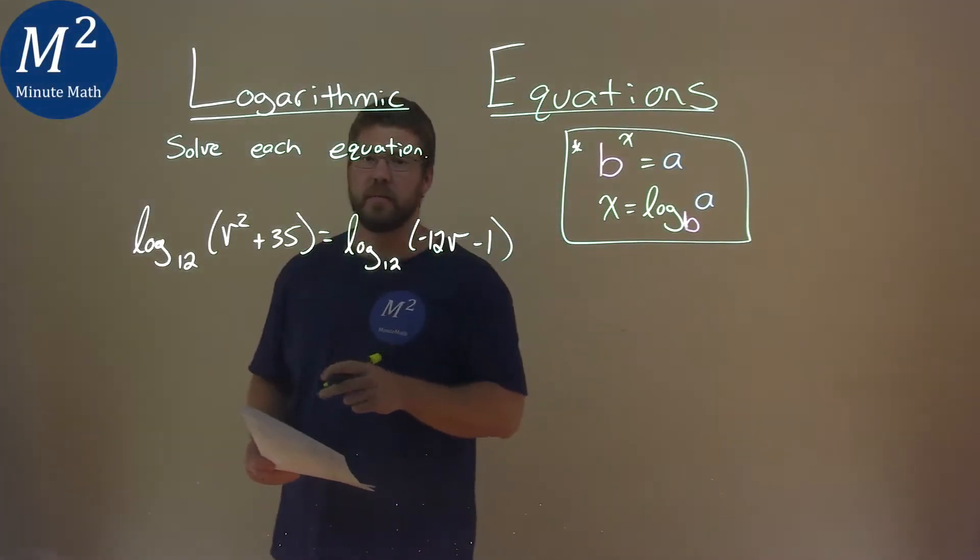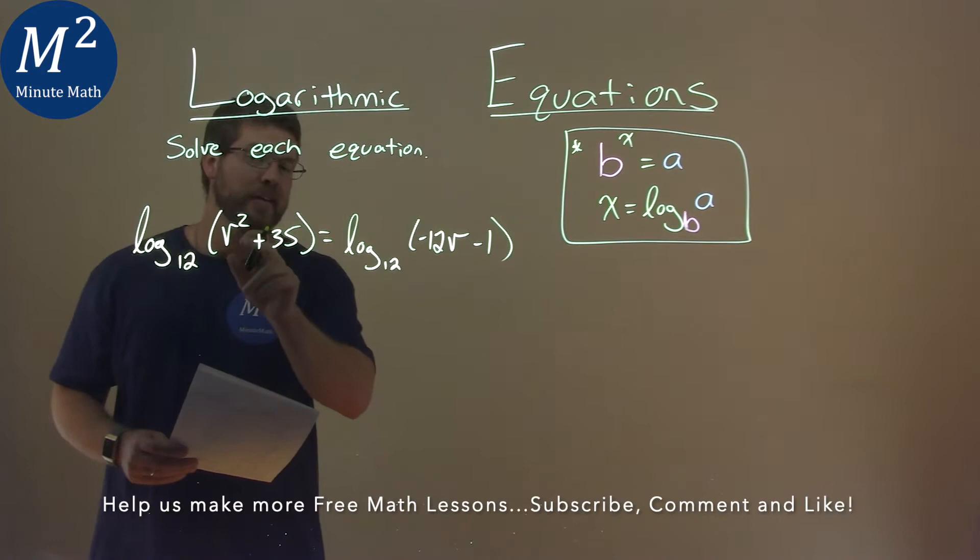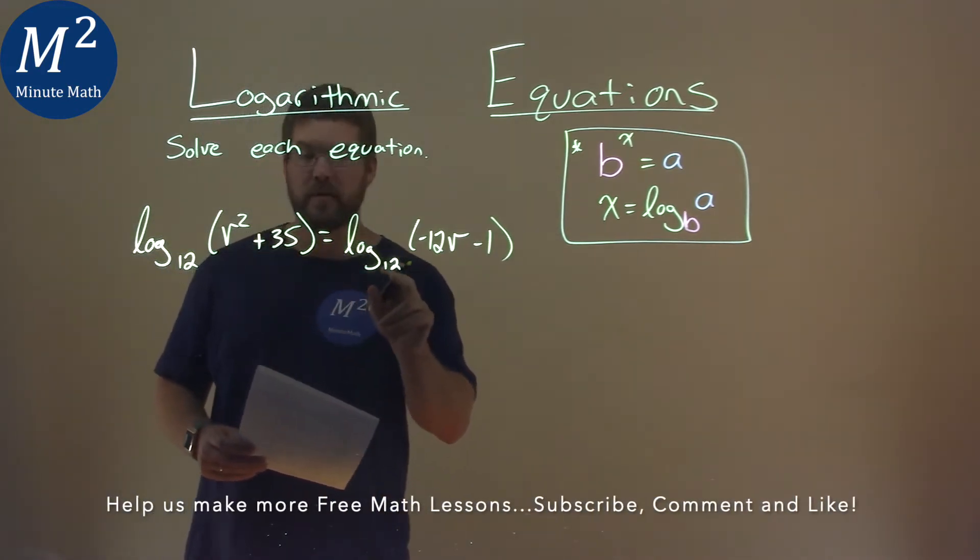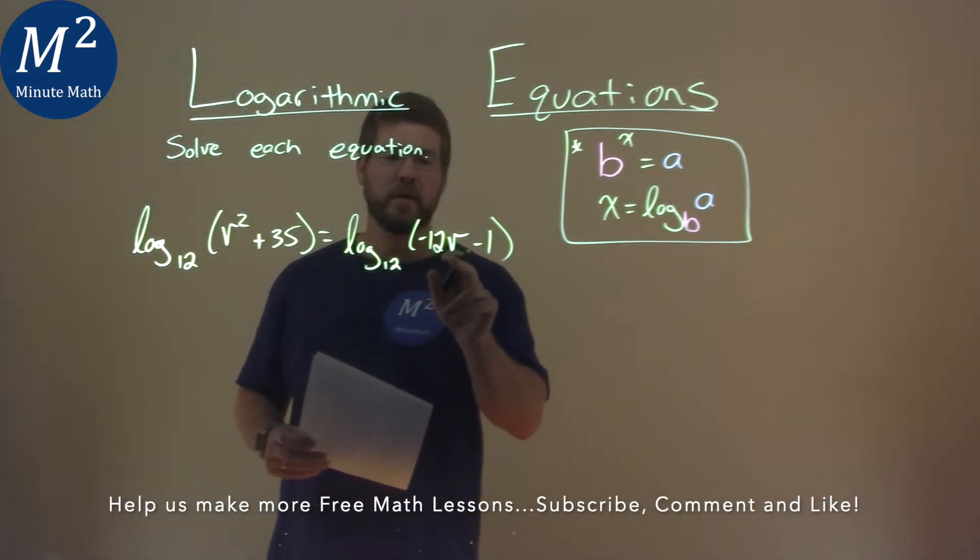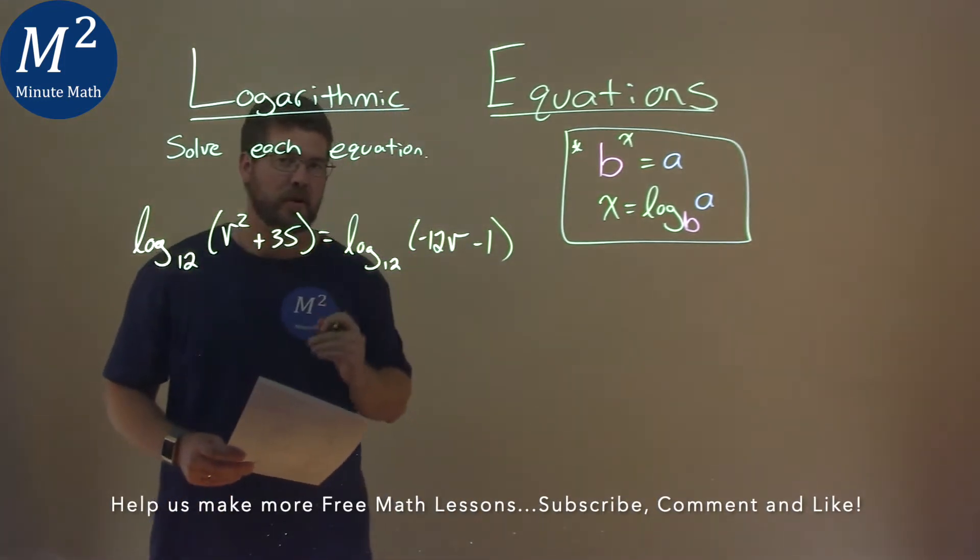We're given this problem right here: log base 12 of v squared plus 35 is equal to log base 12 of negative 12v minus 1. We need to solve this equation.